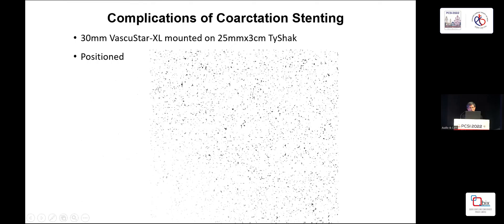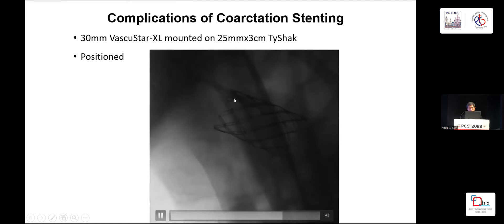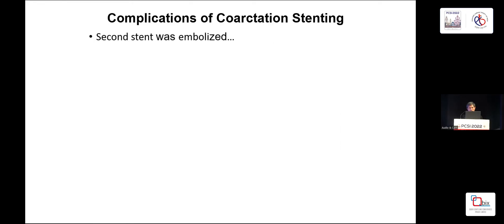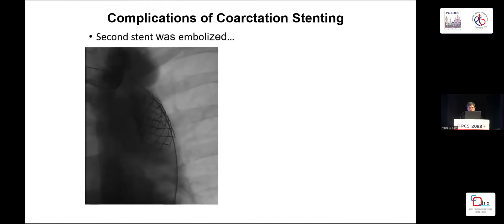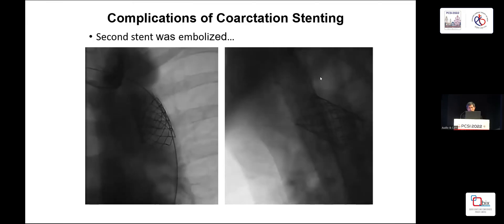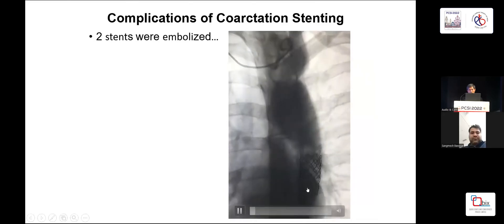But what happened? After inflating the balloon, the stent slipped down into the descending aorta — you can see the stent underneath the coarctation. We tried to put a second stent, a bare metal stent, to fix the first embolized stent to the coarctation. But when we inflated the second stent, both stents embolized — also below the coarctation. After several minutes, both stents migrated to the thoracic aorta.